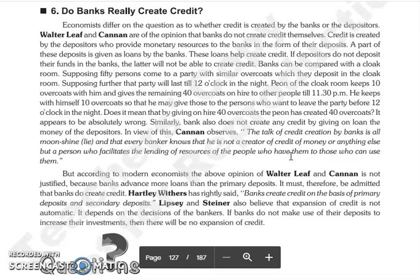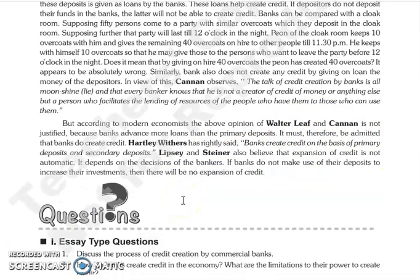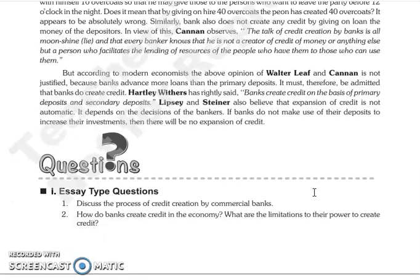According to modern economists, the opinion of Walter Leaf and Cannon is not fully justified. Modern economists say that banks do create credit, as they advance more in loans than the primary deposits. Hartley Withers says that banks create credit on the basis of primary deposits and secondary deposits. Lipsey and Steiner believe that the expansion of credit is not automatic — it depends on the decisions of the banker. If banks do not utilize the deposits for investment, then credit will not expand. So this chapter is now complete.